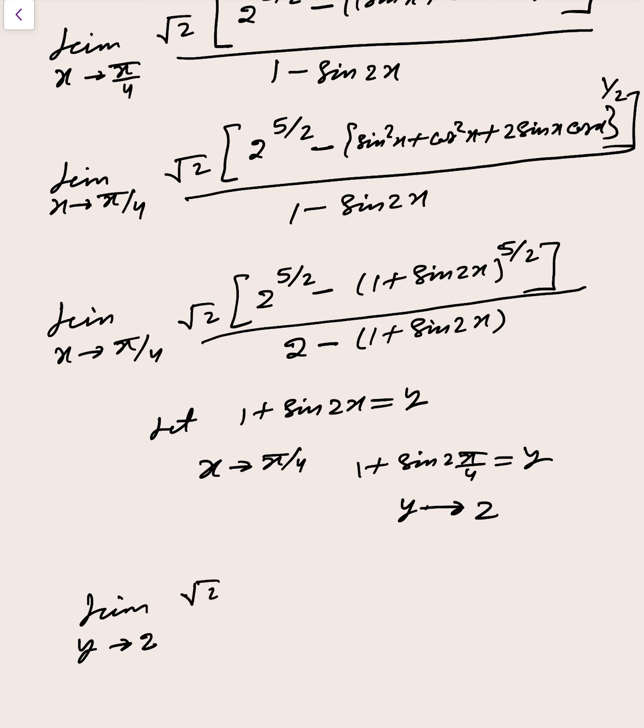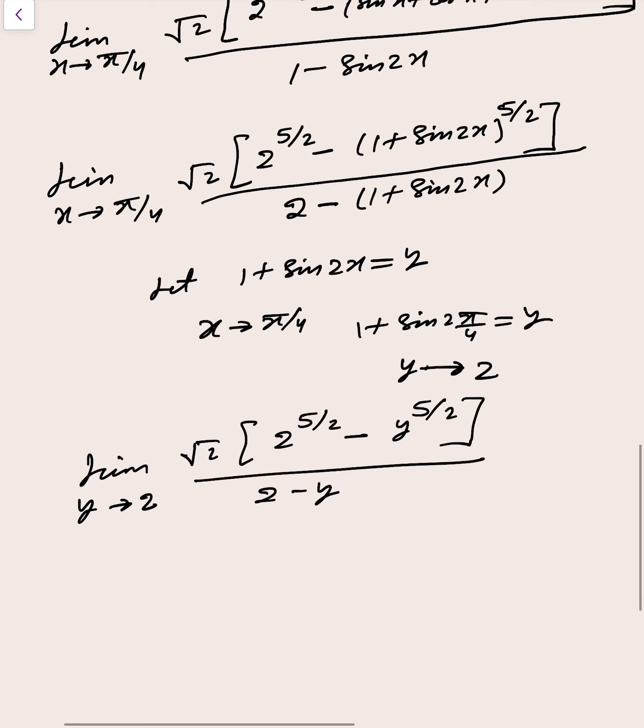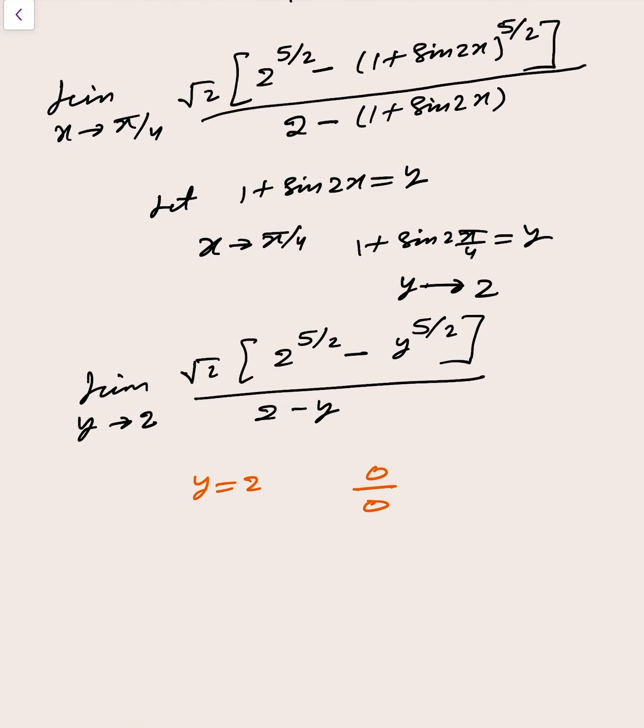It means this one is written as limit y tends to 2, that is root 2, 2 to power 5 by 2 minus y to power 5 by 2, whole divided by 2 minus y. Now if you see very carefully, put y equal to 2, then we got 0 by 0 form.